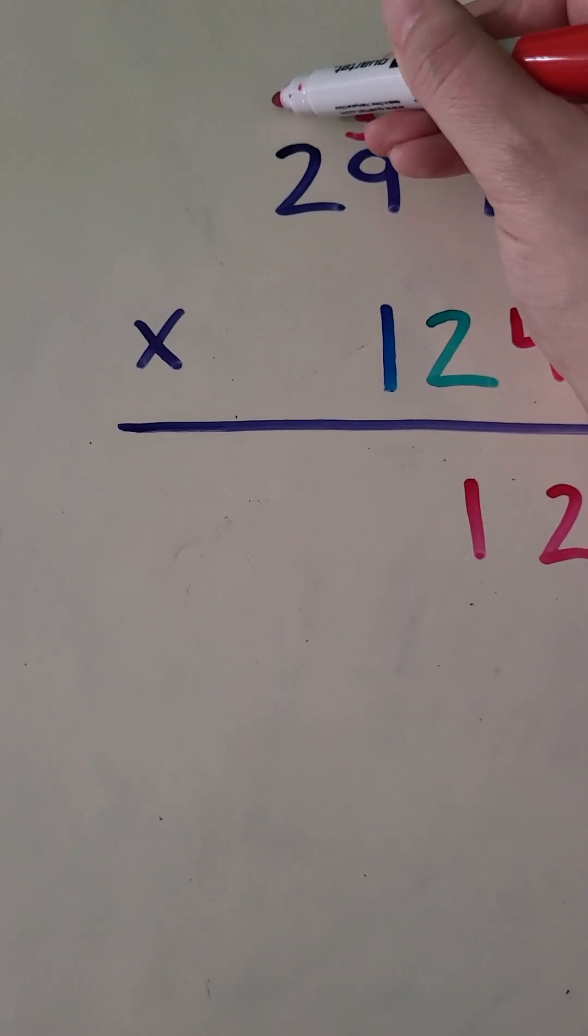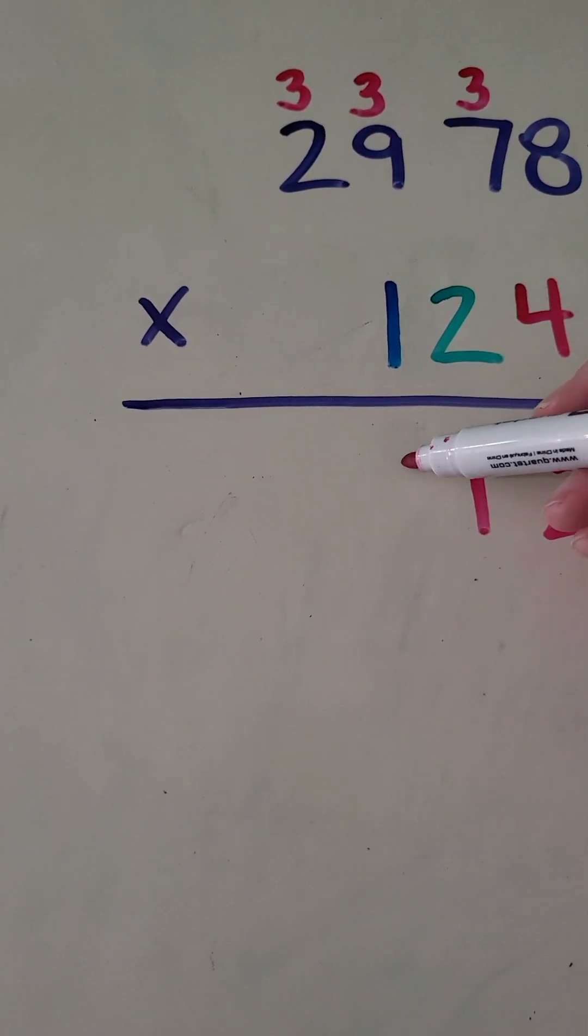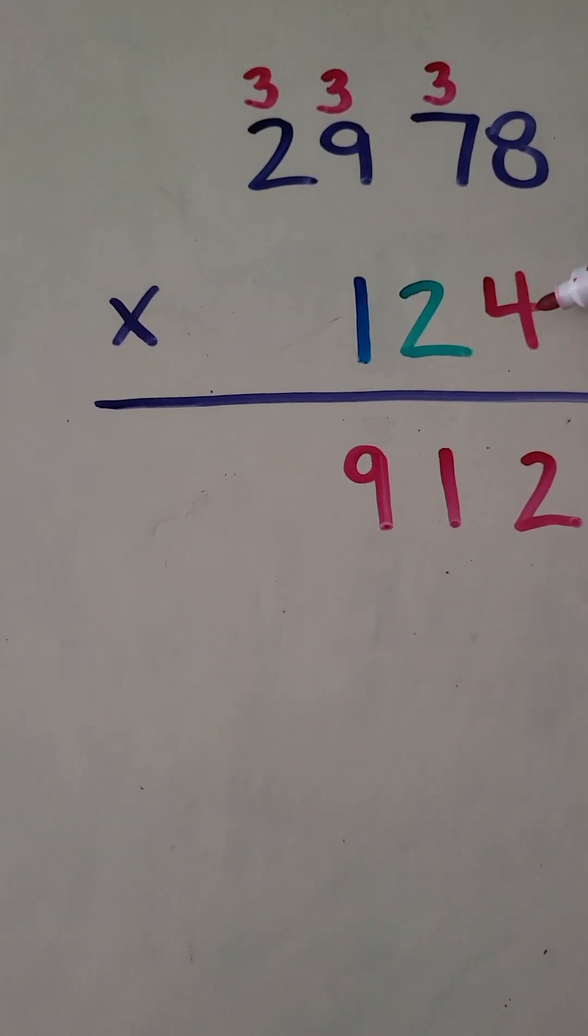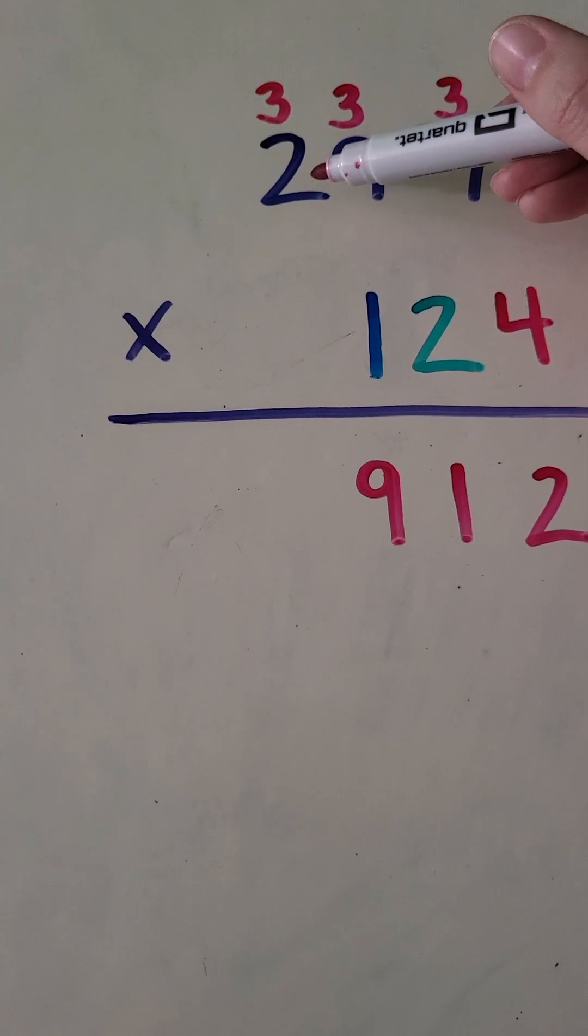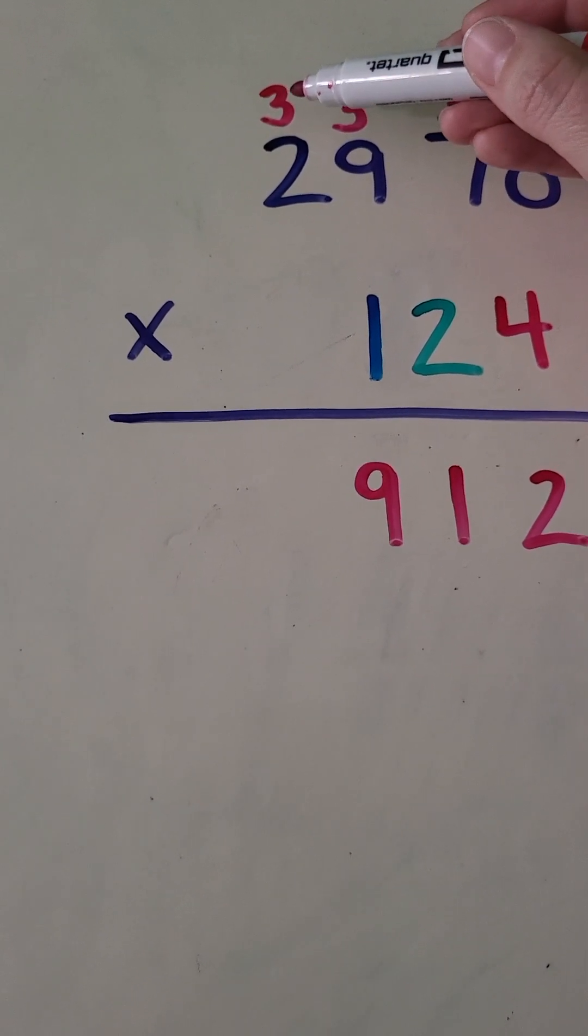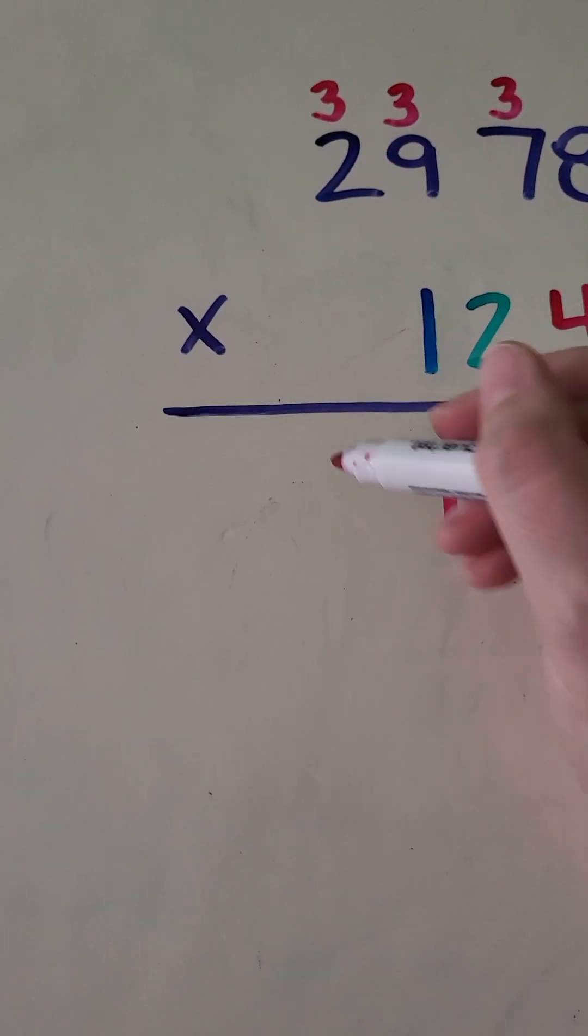Four times nine is 36 plus three, 39. And then four times two is eight plus three, 11. There it is.